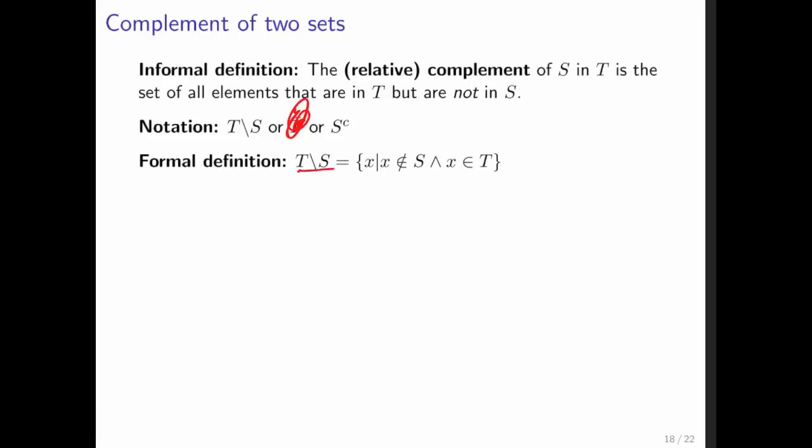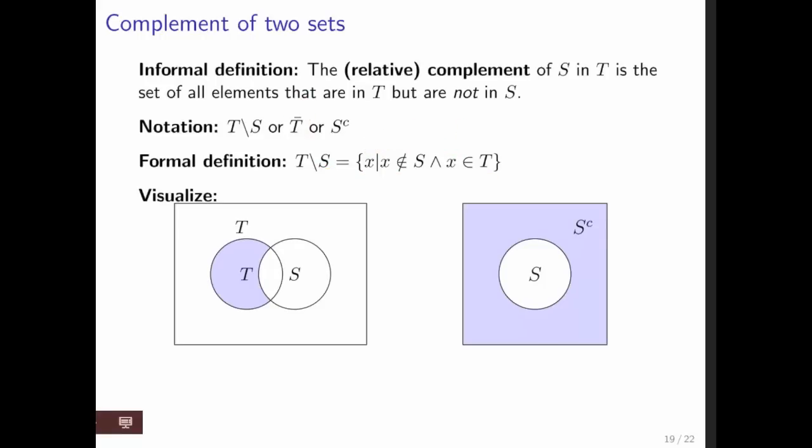Formal definition is S backslash T and it's given as all elements x such that x is not in S and x is in T. This is how you could visualize it and this is the case where it's sort of understood that T is the universe in which S lives.